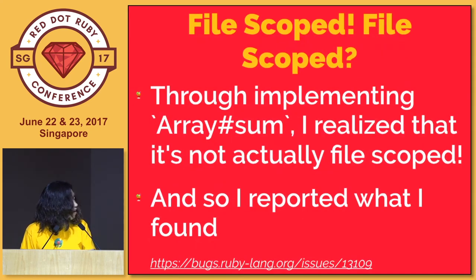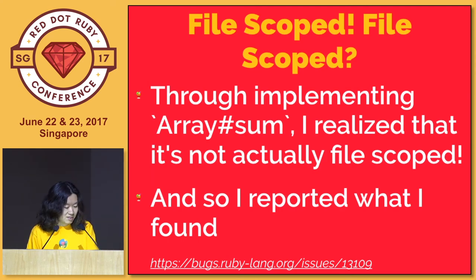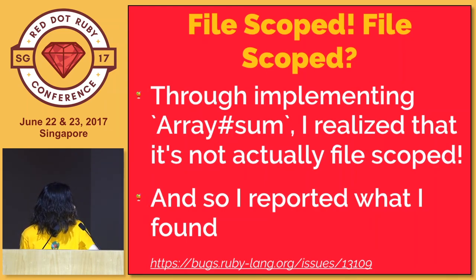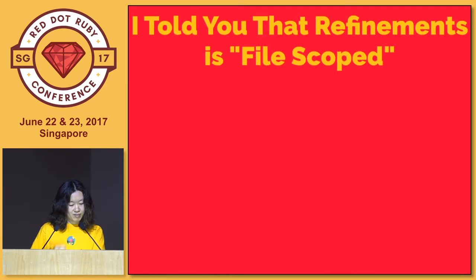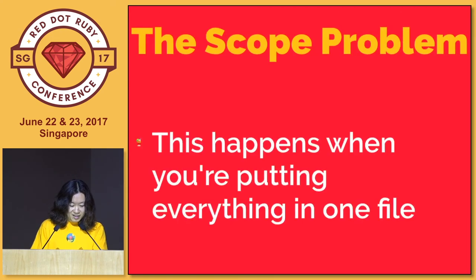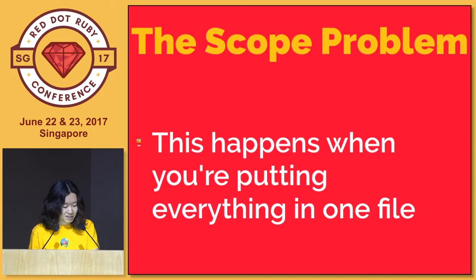The original implementation was creating something called orig_sum publicly. I changed this implementation to use refinements in order not to reveal that orig_sum method to users. So refinements was used to conceal that internal method. I investigated this feature when implementing this, and I found something weird - it's actually not file-scoped. The documentation was lying. So I reported this to Redmine.